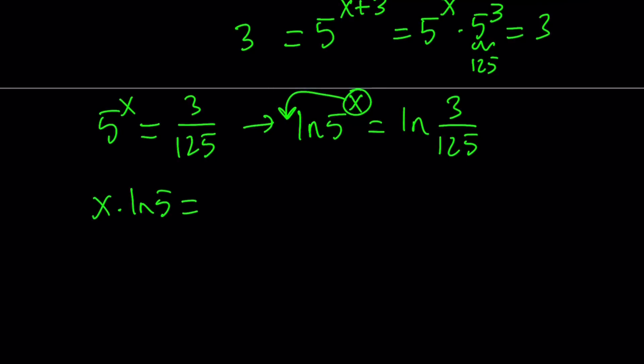We can use the quotient rule here. Remember, if you have ln(A/B), it can be written as lnA - lnB. So, we can write this as ln3 - ln125. And then, we can divide both sides by ln5 to get the answer. So, the answer is going to be (ln3 - ln125)/ln5. So, we can simplify this a little bit,